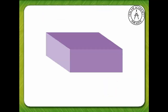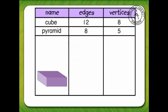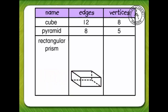Are you ready to play again? Name that figure. It's a rectangular prism. How many edges does a rectangular prism have? 1, 2, 3, 4, 5, 6, 7, 8, 9, 10, 11, 12. A rectangular prism has 12 edges.